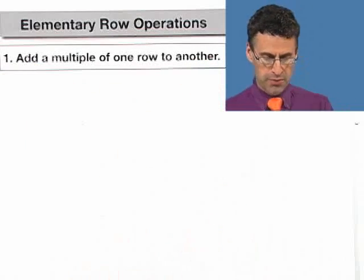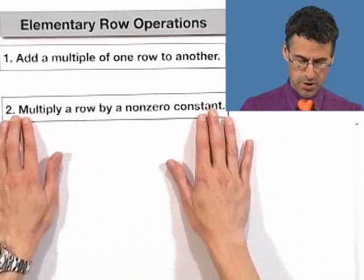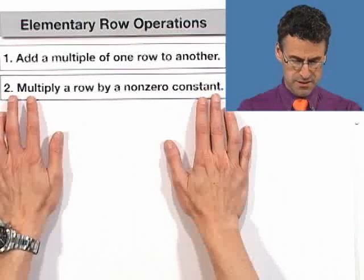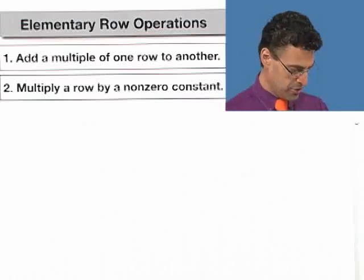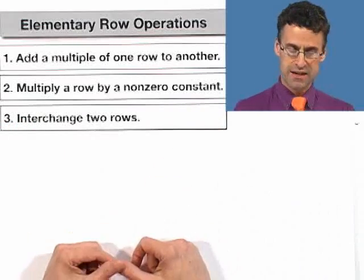You can always add a multiple of one row to another. You can always multiply a row by a non-zero constant, and you can always interchange two rows. Very similar to what we did with the equations if you think back to it.